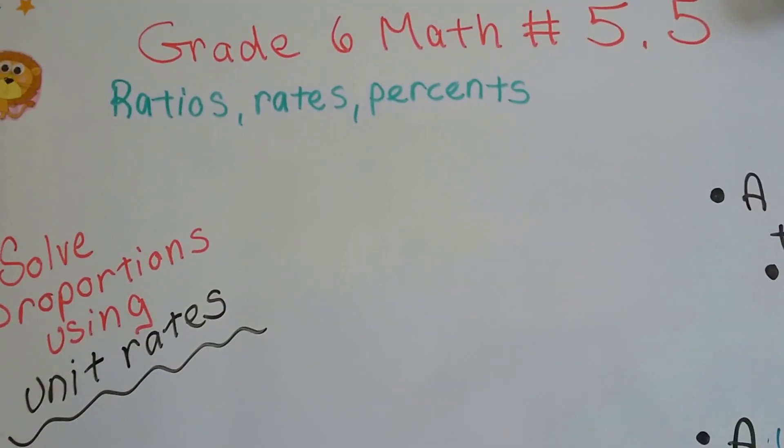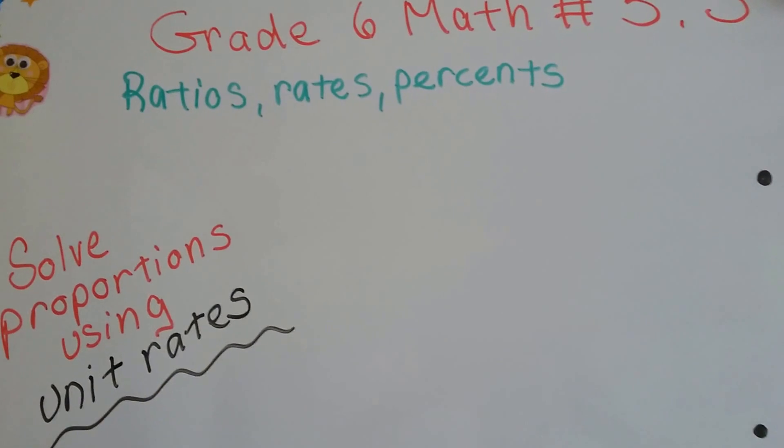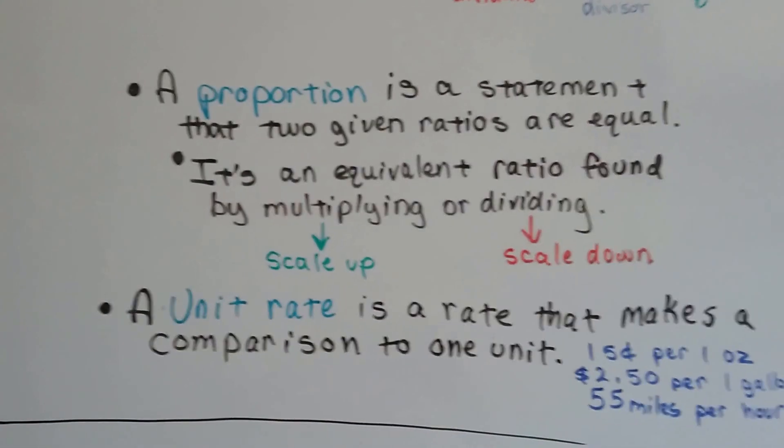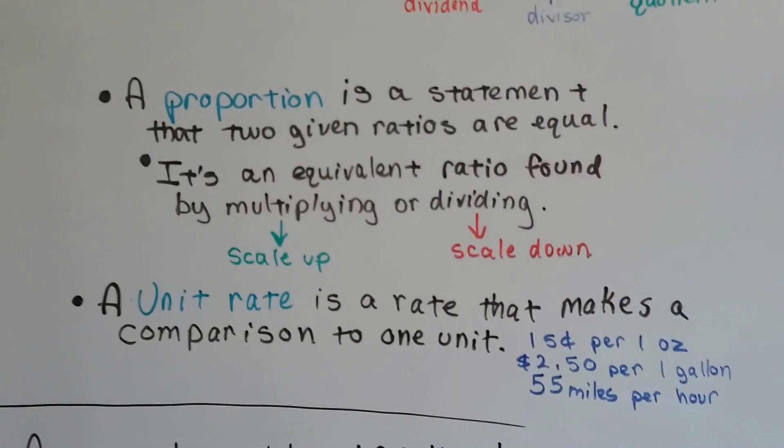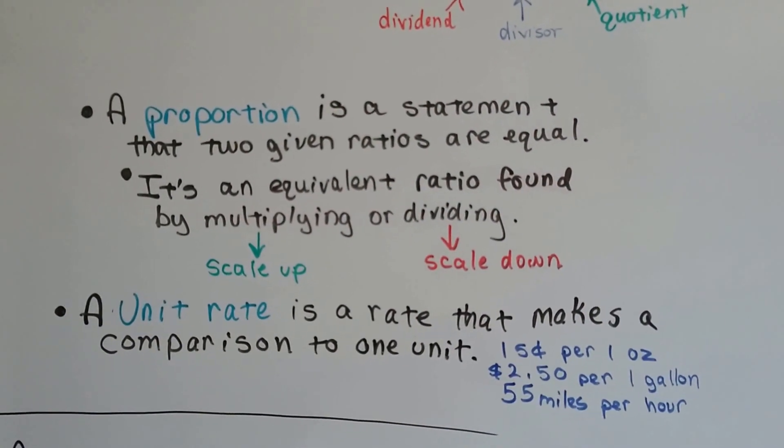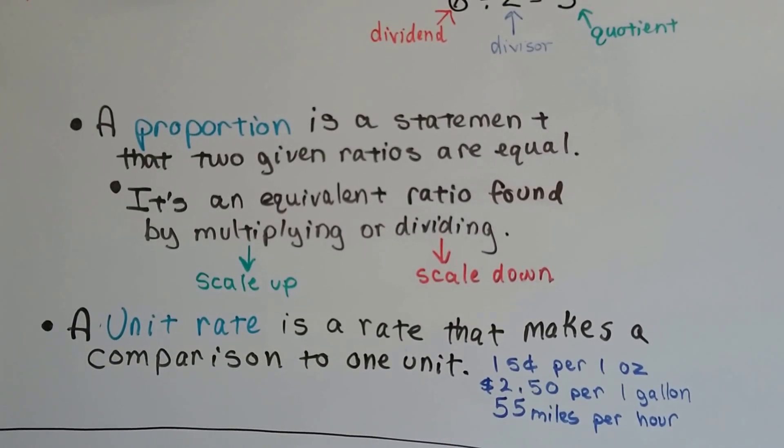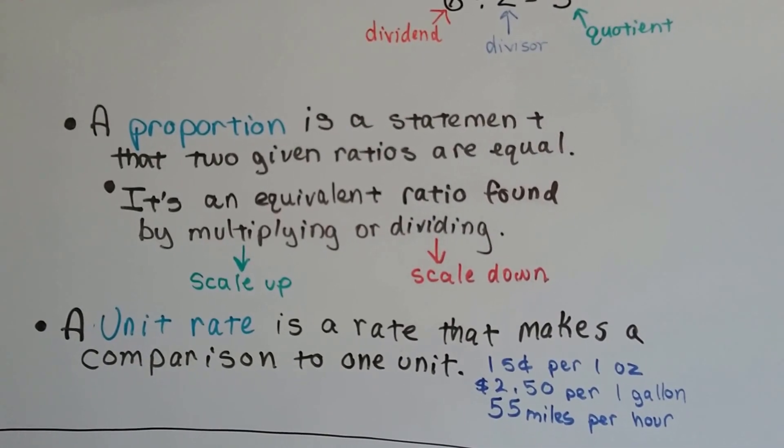Grade 6 math, number 5.5: solve proportions using unit rates. A proportion, if you remember from our previous videos, is a statement that two given ratios are equal. It's an equivalent ratio found by multiplying to scale up or dividing to scale down.